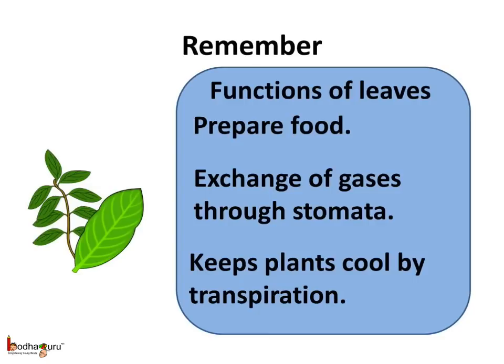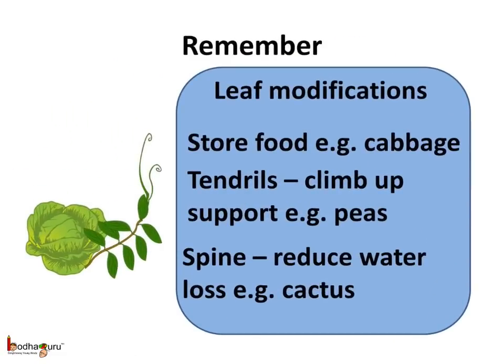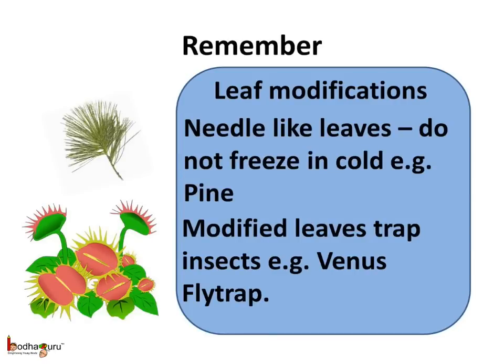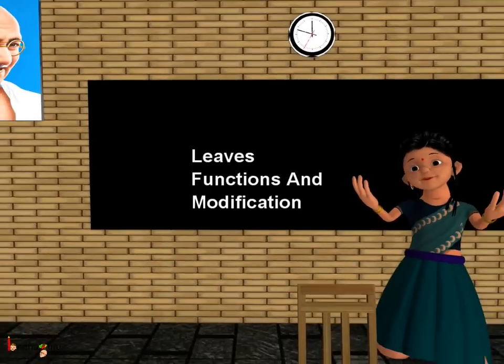To sum up what we learnt today: the functions of leaves are to prepare food, to exchange gases through the stomata, and to keep the plants cool by the transpiration process. The leaves are also modified to perform special tasks — to store food for example in cabbage, tendrils to climb up a support for example in peas, spines to reduce water loss in the case of cactus, needle-like leaves in pine that do not freeze in the cold, and modified leaves to trap insects in the case of the venus fly trap. That was all about the amazing leaves. Bye-bye children.